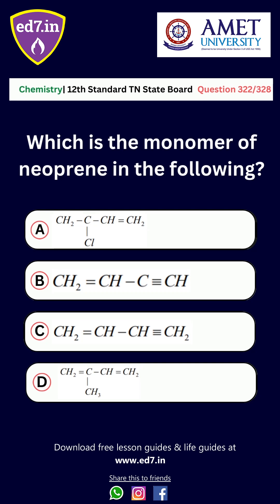Question number 321: Which is the monomer of neoprene in the following? Option A: the structure in Option A, Option B: the structure in Option B, Option C: the structure in Option C, Option D: the structure in Option D. The correct option is the structure in Option A.